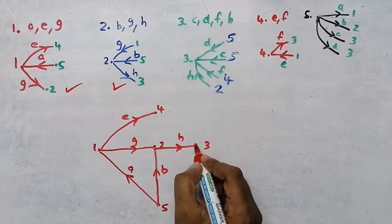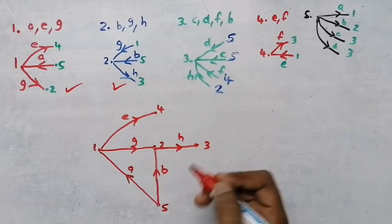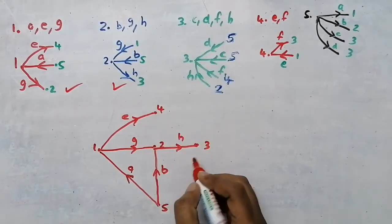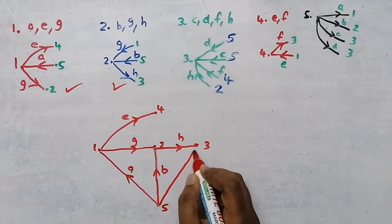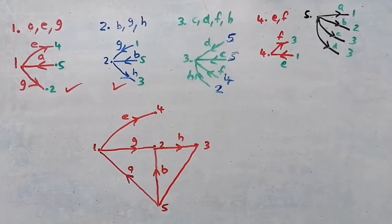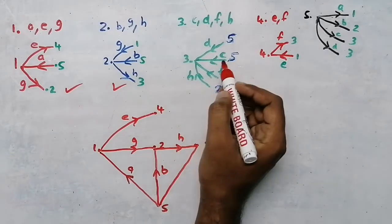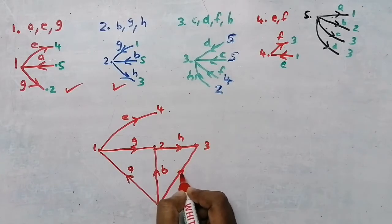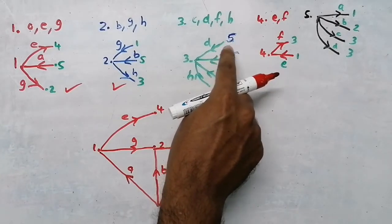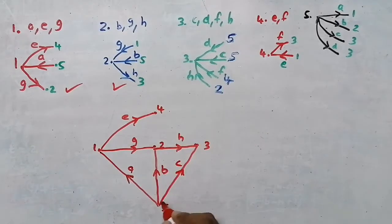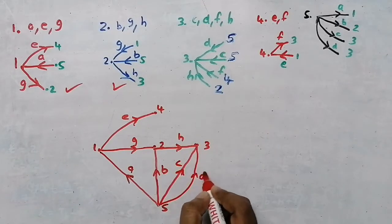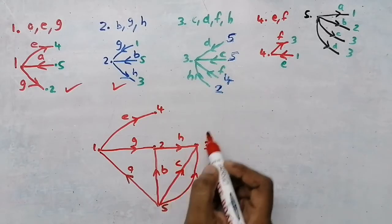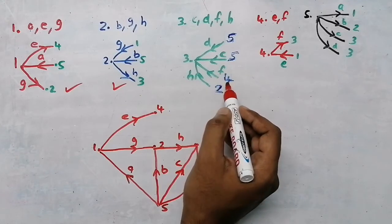Node 1 is completed, node 2 is completed. Now we take node 3. First I check whether I have connection with my reference node - yes, I have two connections: branch c and branch d. I am going to draw branch c first - direction is from 5 to 3. Branch d is also from 5 to 3. Now branch f and branch h - h is already drawn. Branch f is from node 4 to node 3.